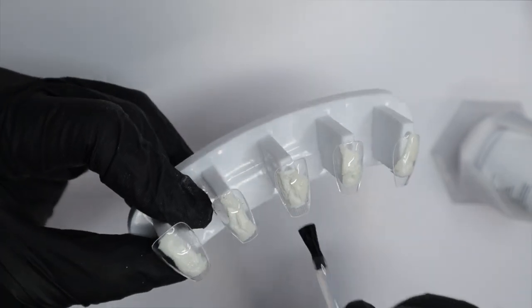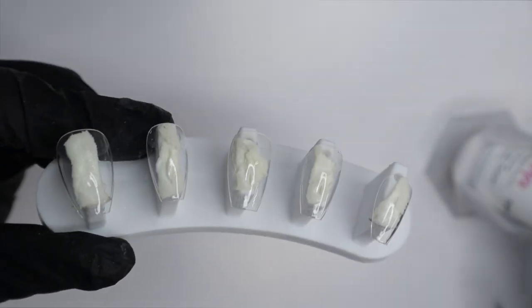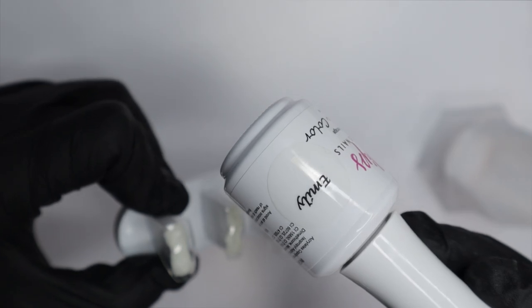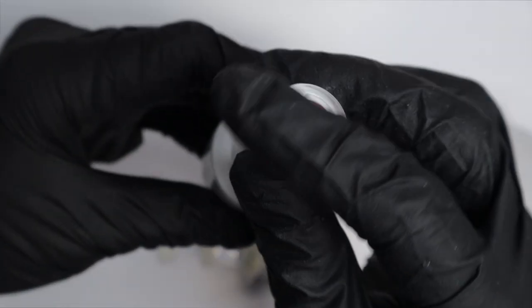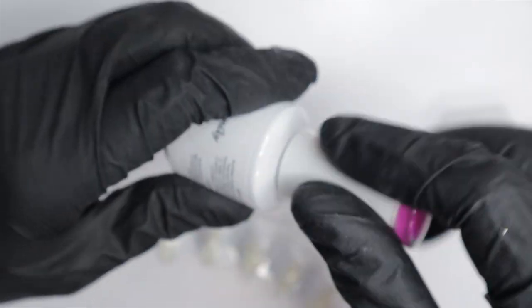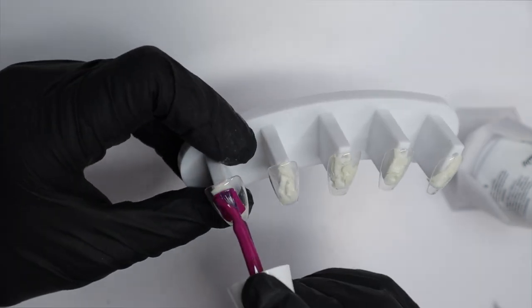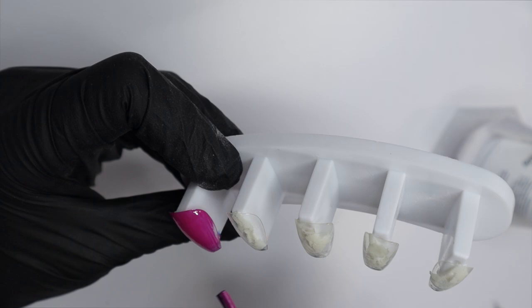Now that the gel base is on all of the tips, I'm going to cure this in my lamp for a full 60 seconds. And then we can get into the gel polish color. The color I've chosen is this color Emily from Soul Dips. It's a gorgeous magenta color. It's a solid color, but Soul Dips has a huge variety of gel polishes. They're absolutely stunning.